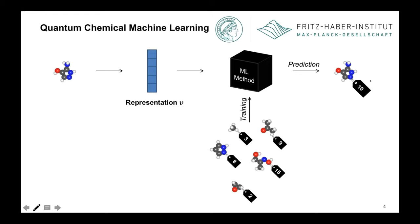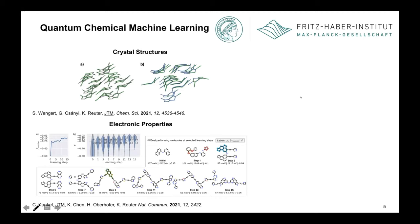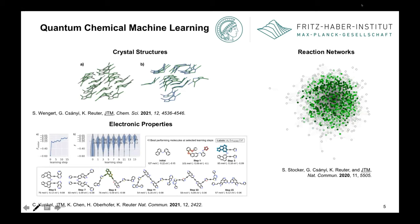The prediction is always cheap because these things are made to be cheap in prediction, but you have to take into account the training cost. The motivation for using machine learning methods, in my view, is really a practical one. With these ML models, we can do things we couldn't do with brute-force electronic structure calculations. Whenever I have a project where I can do it with brute-force electronic structure calculations, I still prefer to do this. Machine learning is a means to an end.